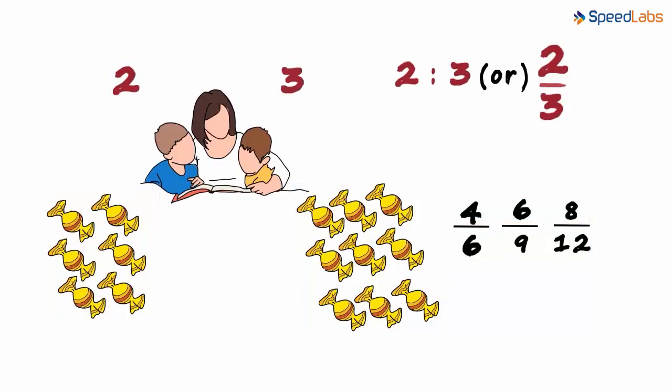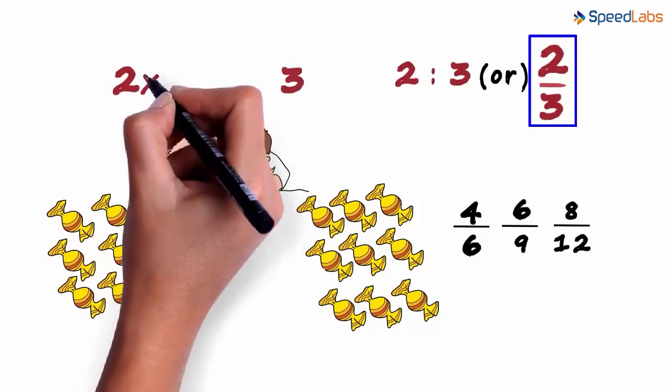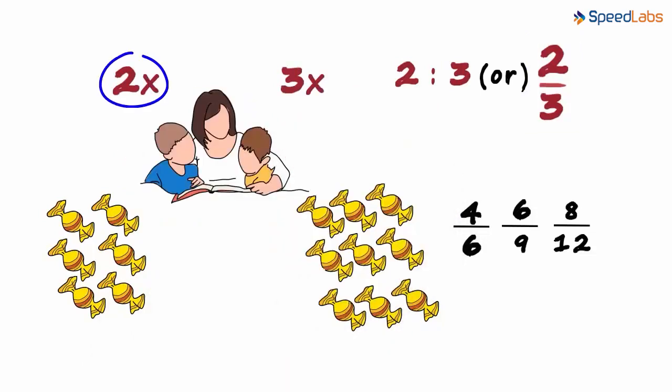A few students have this confusion that the ratio of 2 by 3 will mean Gaurav has just 2 chocolates and Jai just 3 chocolates. If the ratio is 2 by 3, then the quantities will be in the form of 2x and 3x, where 2x and 3x are multiples of 2 and 3.